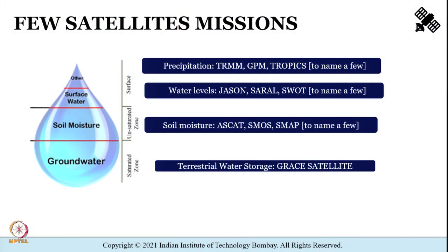Let me draw your attention to one particular slide shown in previous lectures about how different satellite remote sensing missions help us learn about hydrology. There are missions that give us information about groundwater — we learned about the GRACE satellite — and missions for surface water, where we learned about the fundamental principles of radar altimetry and data from satellites like Jason and Sentinel. In this tutorial we will be trying to understand data pertaining to soil moisture information obtained from satellites through the microwave region of the electromagnetic spectrum.